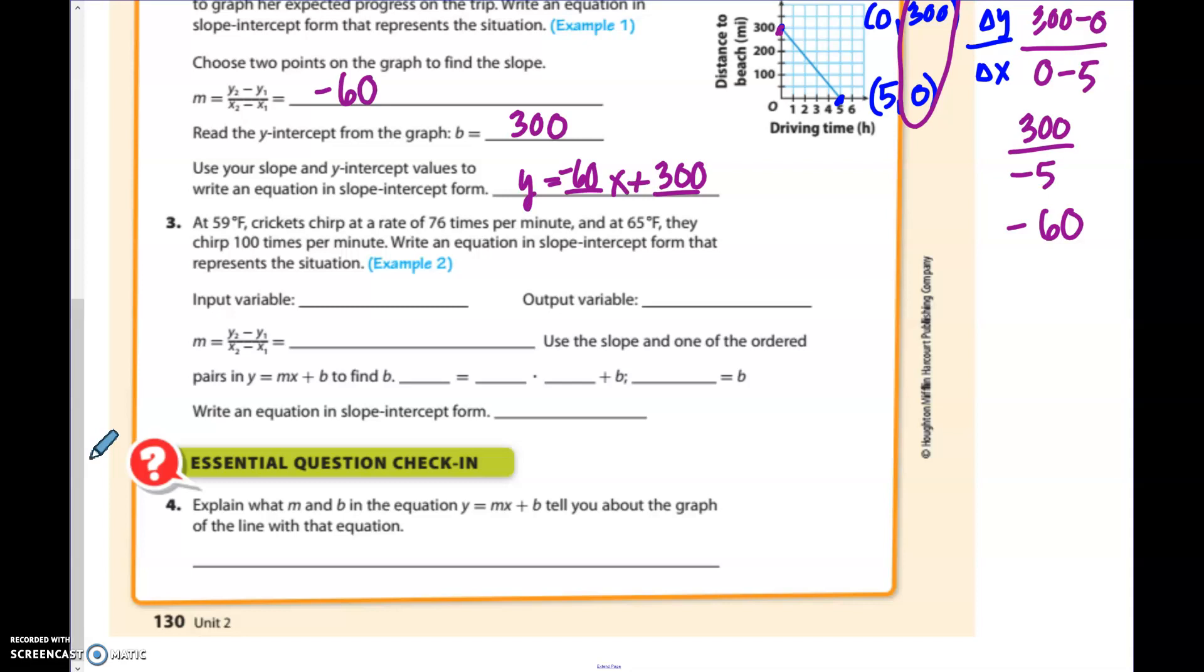So the output is going to be the chirps. So remember, input is X, output is Y. So when I write my ordered pair, I'm going to put my temperature first, 59. And the number of chirps was 76. In the second one, I have 65 degrees. And the chirps were 100.